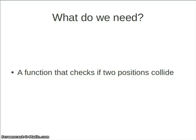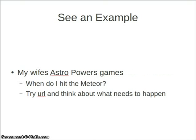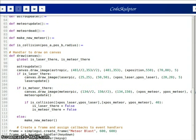Let's think about something that we always need. Something we will always need is a function that is able to check if two positions on our canvas collide with each other. Let's look at an example. My wife has written a little Python code in this class which she calls Astro Powers. I provided the URL for you.